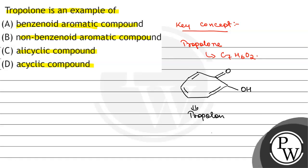Now, let's see that this is an aromatic compound, but this is a non-benzenoid aromatic compound. This compound does not have a benzene ring, but it is aromatic in nature. So, tropolone is a non-benzenoid aromatic compound.